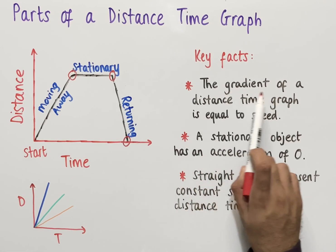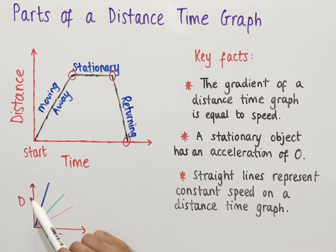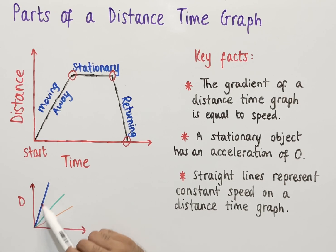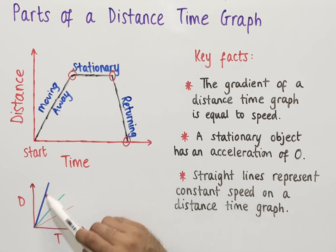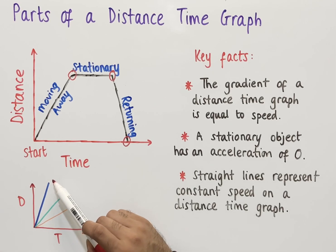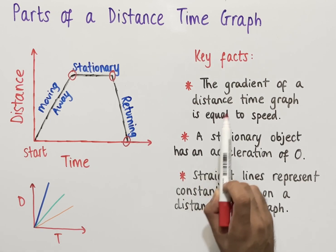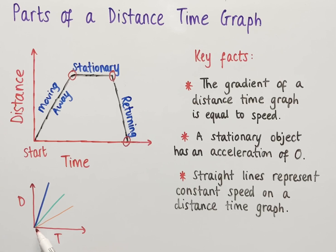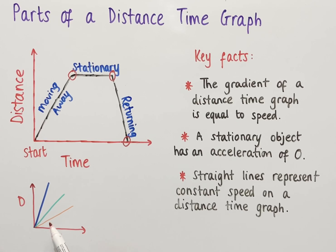Looking at a basic distance-time graph with distance d on the y-axis and time t on the x-axis, we have three lines: a blue line, a green line, and an orange line. The blue line is the steepest of all three and therefore has the greatest speed, since the gradient of a distance-time graph equals speed. The orange line has the smallest gradient and therefore the least speed. So the object represented by the blue line is traveling fastest, and the object represented by the orange line is traveling slowest.